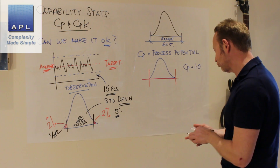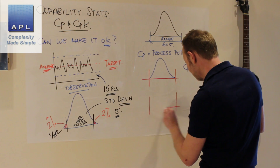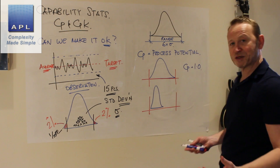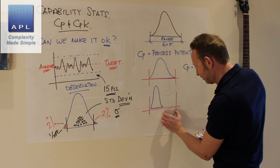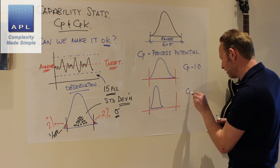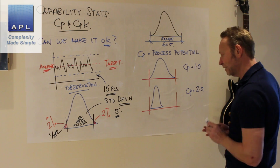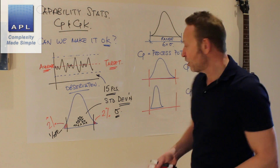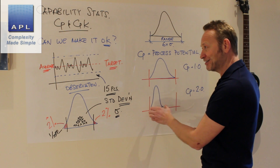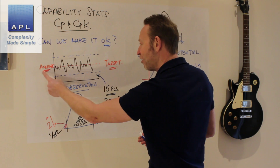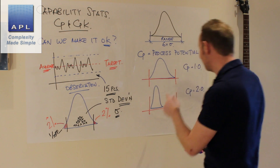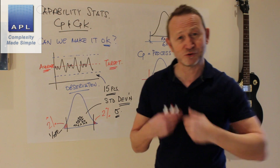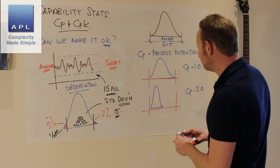CP doesn't care about the fact that the distribution is off-center — it's just width versus width. But of course we need to take into account whether it's centered or not, because one of the questions we need to answer is: are we hitting the target? We've asked the question of variability with CP. Now somewhere we need to take into account whether we hit the target or not. And that's what the CPK is — CPK is the actual capability, and it does take into account the center.